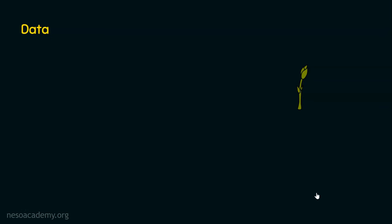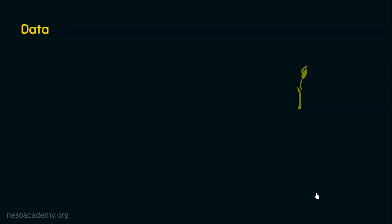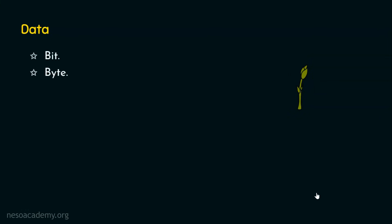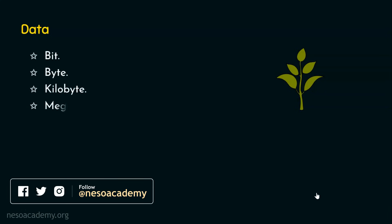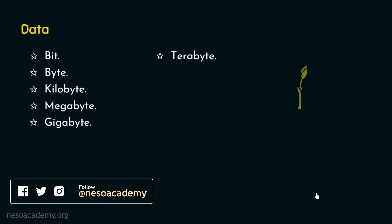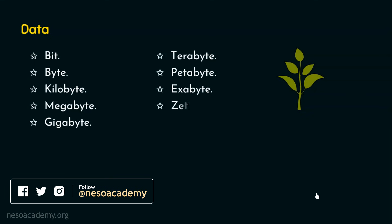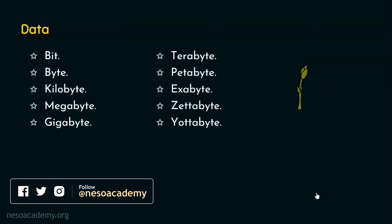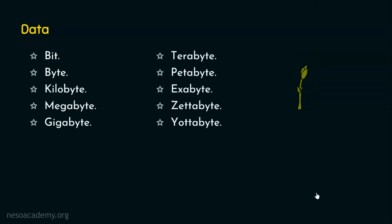The volume of data handled by DBMS is really fascinating, because the data that is processed by DBMS is not just bits or bytes of data. They range in kilobytes, megabytes, gigabytes, terabytes, petabytes, exabytes, zettabytes, yottabytes and what not. In the coming future, we may also end up with more data volume than what is specified on the slide.